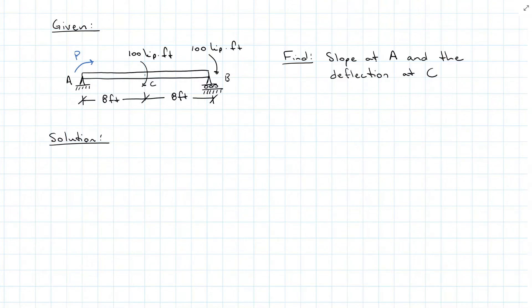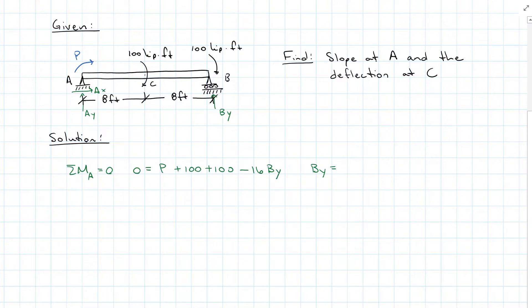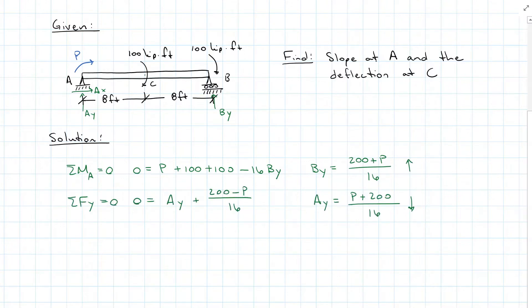Then I am going to solve for my reactions, making sure I include P in my equilibrium equation. I find that BY is 200 minus P divided by 16, acting up. Correcting for a sign error in BY and plugging it into my force Y equation, I get AY is 200 plus P, acting down.